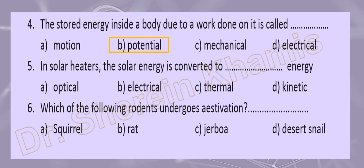Question number five: solar energy is converted to what? When we use a solar heater, solar energy is converted to heat energy. The new name for heat energy is thermal energy, so the right answer is thermal energy. Question number six: which of the following rodents undergoes estivation? Estivation means burrowing in summer season. The answer is jerboa — it makes burrows or caves in summer.